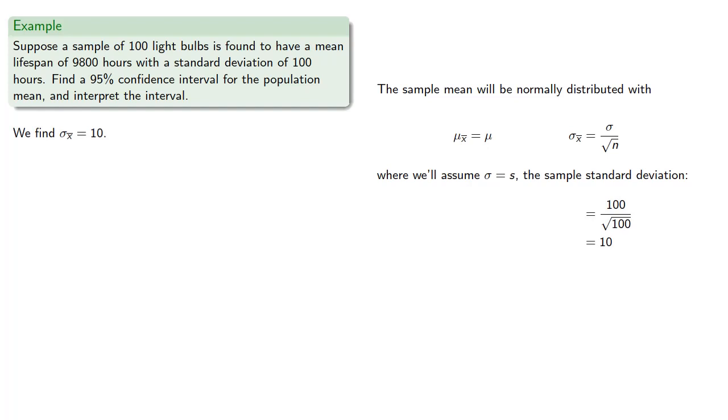And since we're looking for a 95% confidence interval, our confidence interval will be within 1.96 standard deviations of the sample mean.